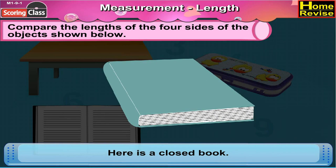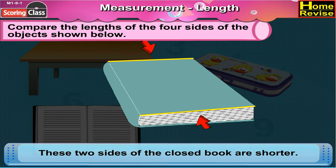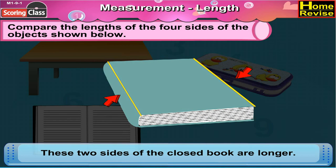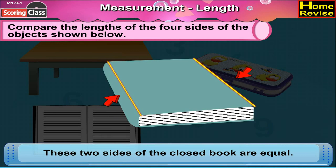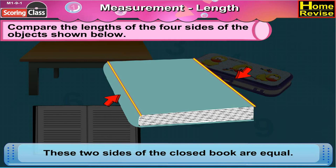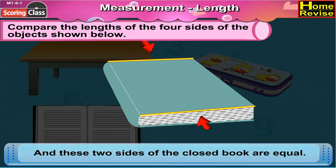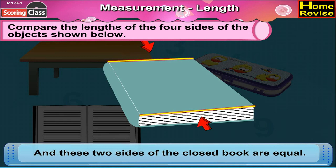Here is a closed book. These two sides of the closed book are shorter and these two sides of the closed book are longer. Now these two sides of the closed book are equal and these two sides of the closed book are also equal.